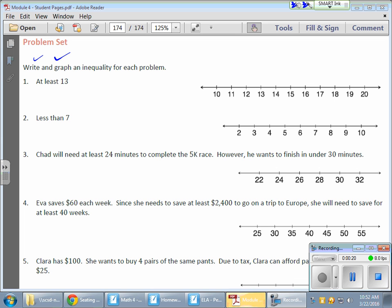The first problem says 'at least 13.' It's important to understand that these words mean a great deal. If I'm talking about 'at least 13,' that actually includes 13. So my possibilities can be 13, and it could also be more.